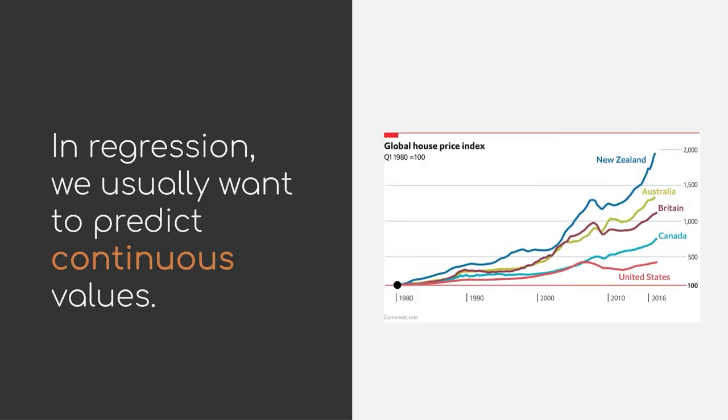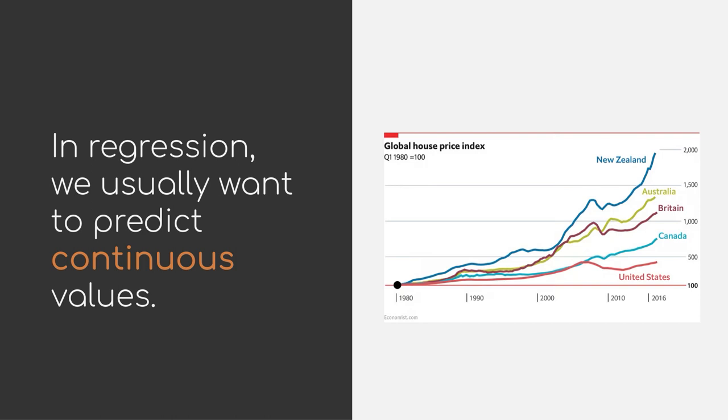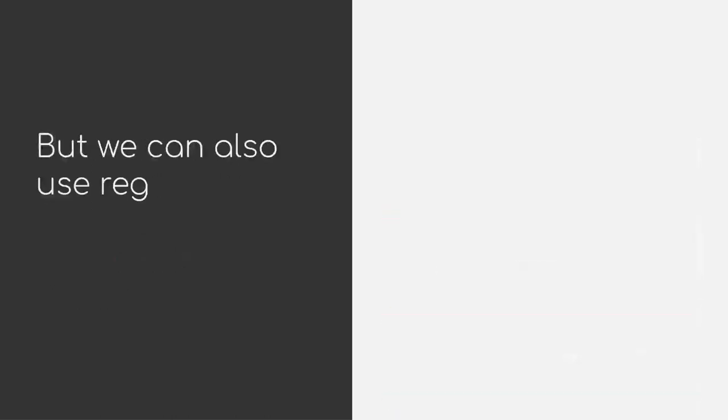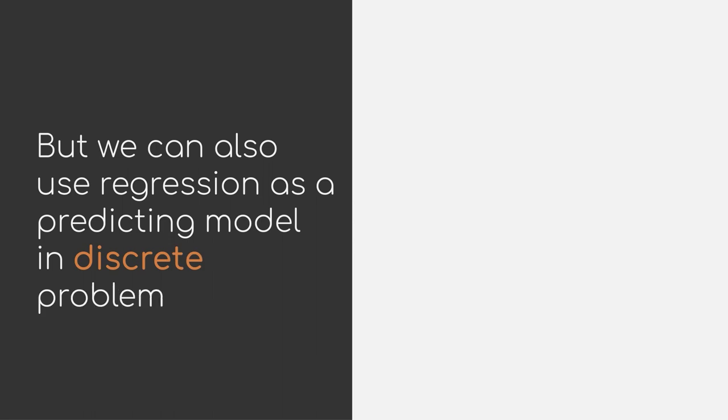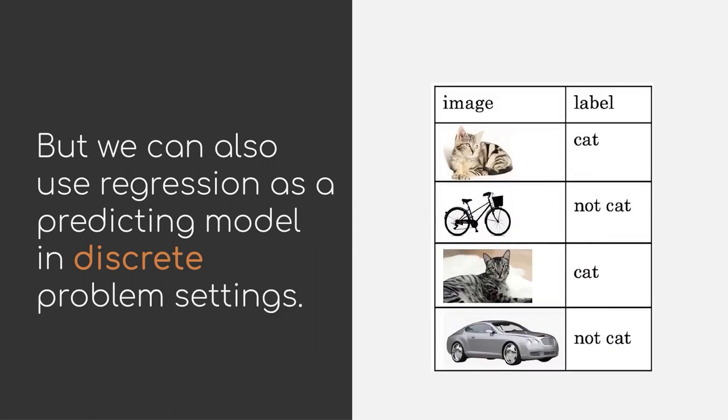I have mentioned that in regression we usually want to predict continuous values, such as house prices changing over the course of years. But we can also use regression as a predicting model in discrete problem settings, for example asking whether the picture we see shows a cat or not.